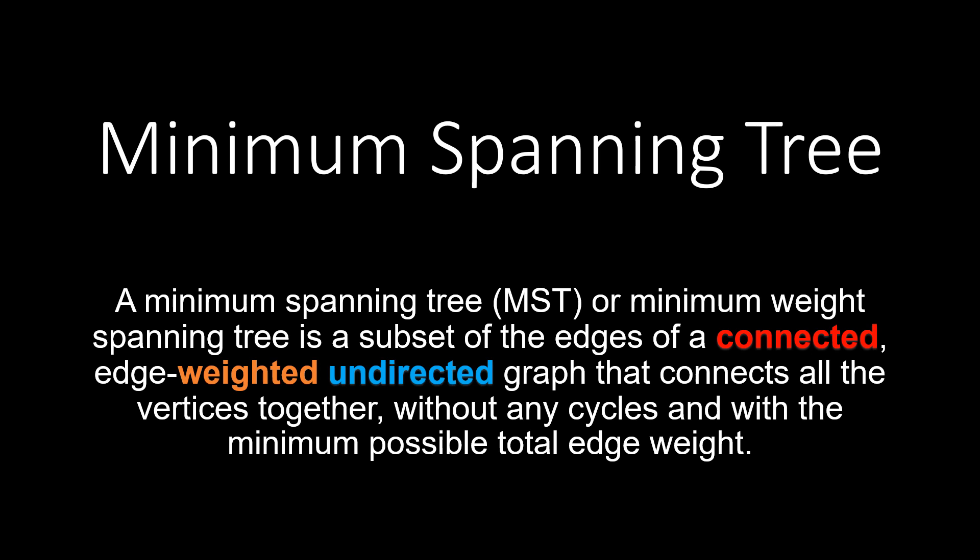The three important words in this definition are connected, weighted and undirected. We can find a Minimum Spanning Tree with the algorithm we are about to discuss only for the graphs which are weighted, undirected and connected. For unweighted graph we can assume the weight of all the edges to be the same.